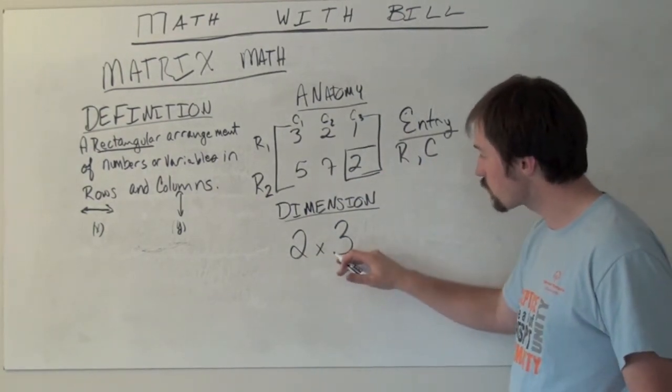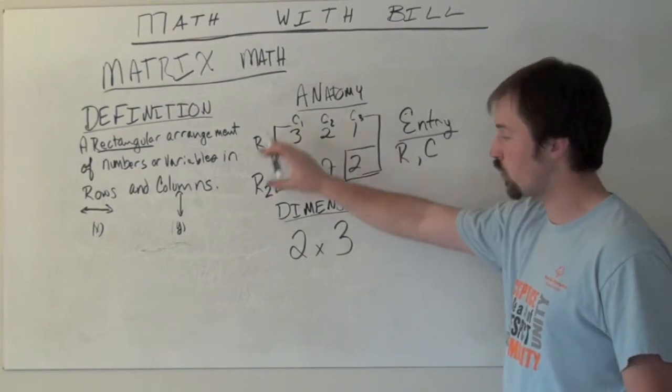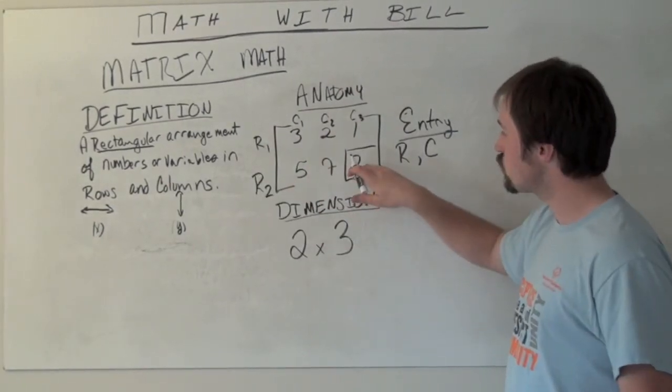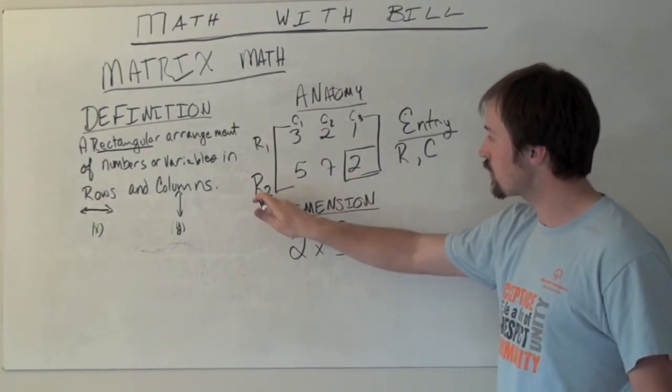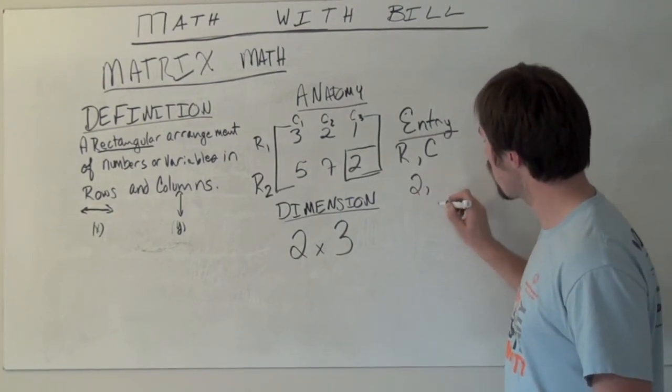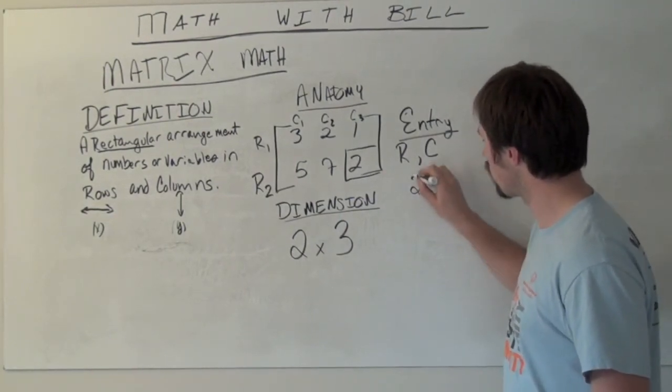So while this is a 2 by 3 matrix, this whole thing together, this 2 right here represents the entry in row 2, column 3.